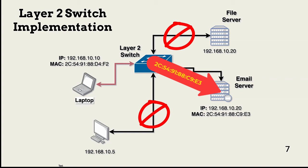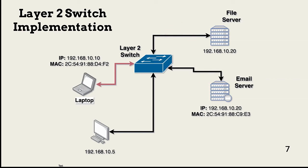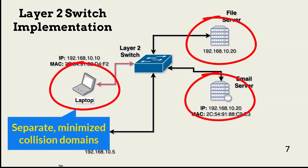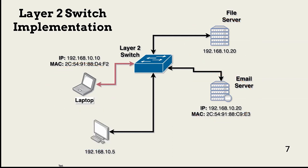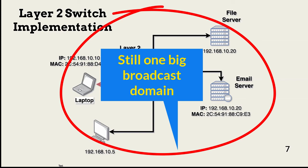This process requires the switch to build tables to know where devices reside. All devices on the same switch port are members of the same collision domain. In this example, there is only a single device in each collision domain, but this is not always the case — the number of devices in a collision domain depends upon how the network is segmented and how many devices are on a segment. Switches pass broadcasts to all devices; consequently, this network is still one big broadcast domain.